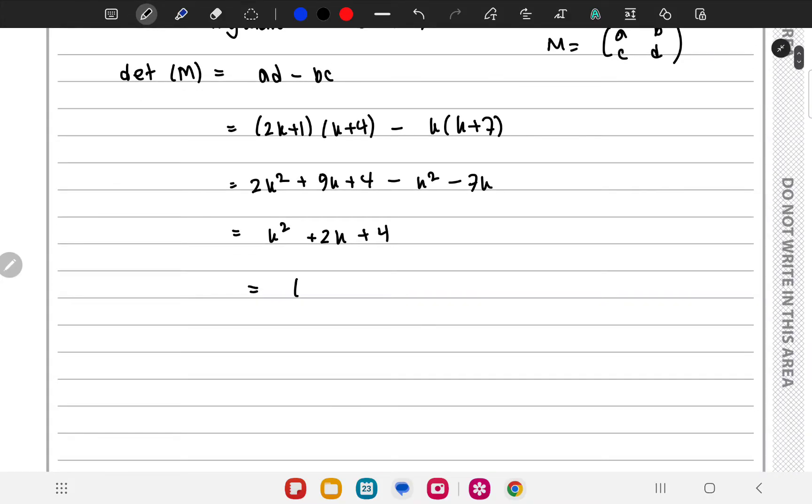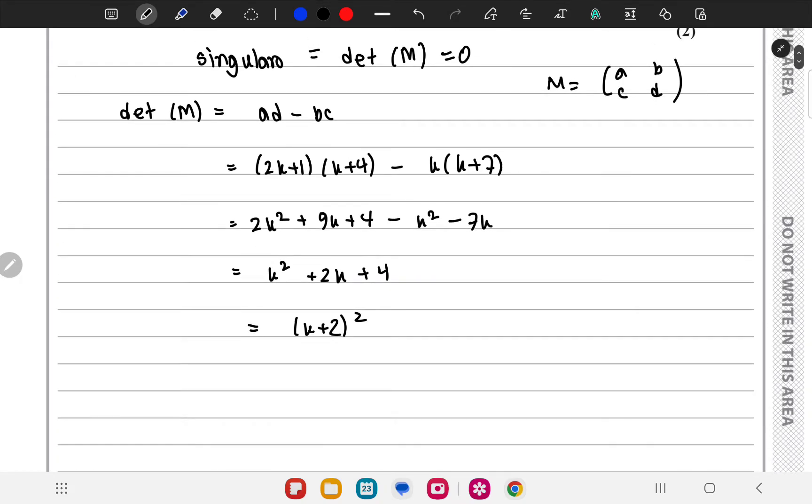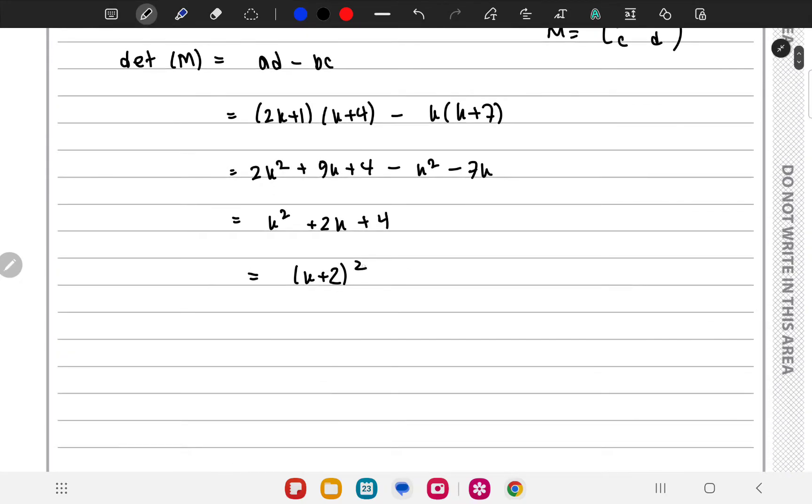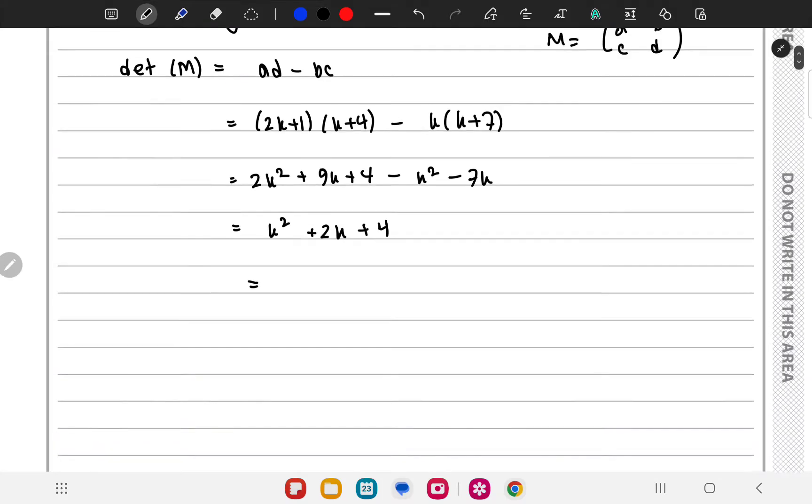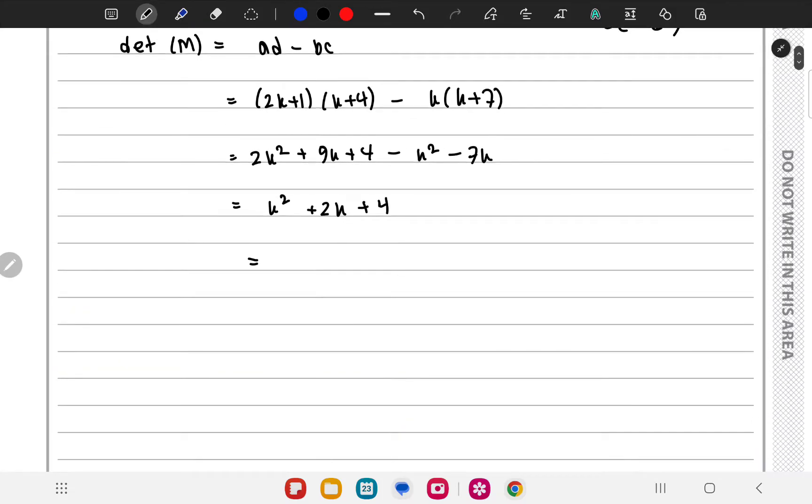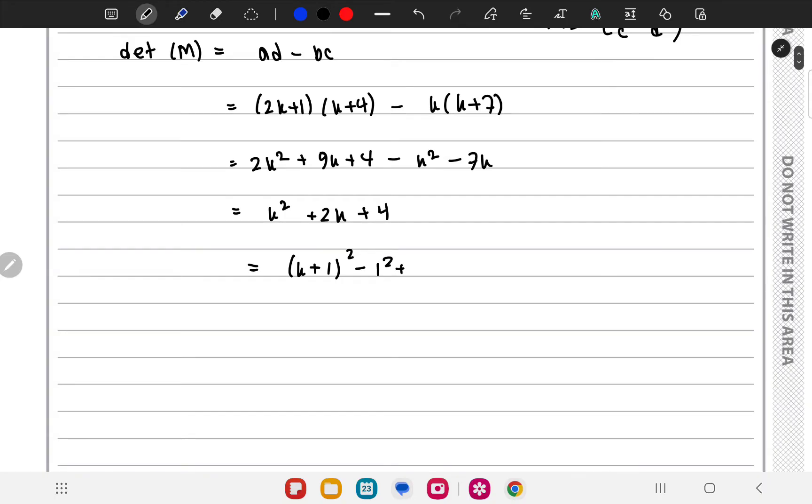This is basically K plus 2 whole square. Oh no, it's not K plus 2 whole square. We can complete squares for this. So we will get K plus 1 whole square minus 1 square plus 4. So K plus 1 whole square plus 3.